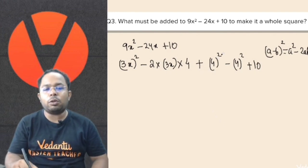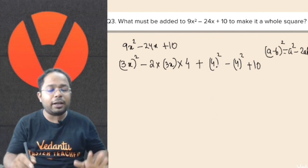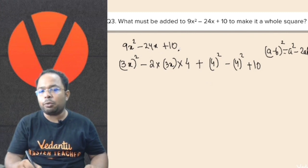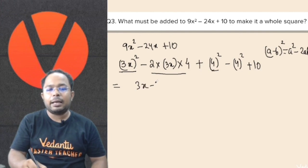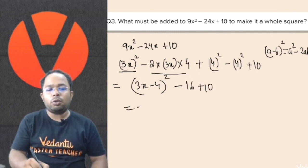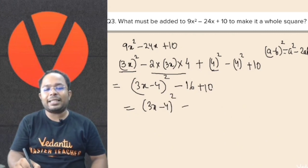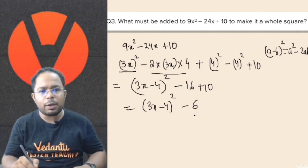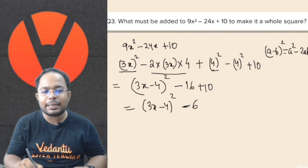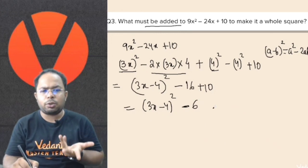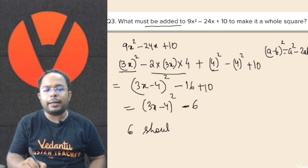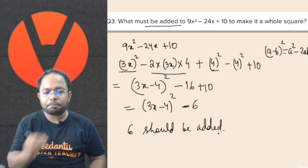So we add plus 4 squared minus 4 squared so it cancels and doesn't affect the previous expression. The benefit is we now see a squared minus 2ab plus b squared forming, which is 3x minus 4 whole square. What remains is minus 4 squared is minus 16 plus 10, which gives minus 6. So we have 3x minus 4 whole square minus 6. To remove the minus 6 problem, we add 6 to the expression. So 6 should be added.